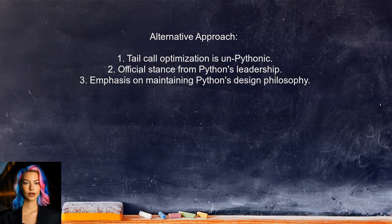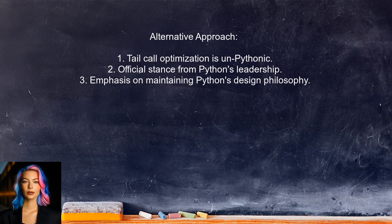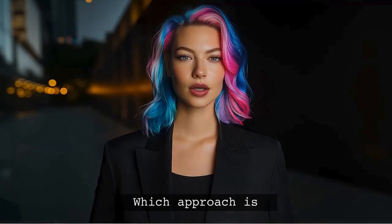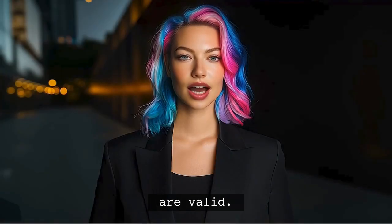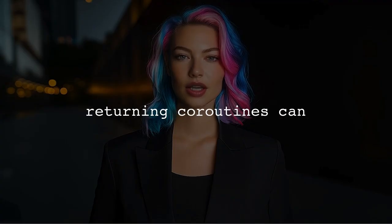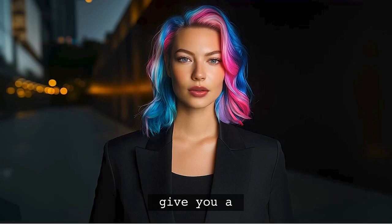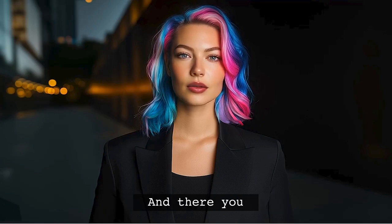According to another user, the question of whether using coroutines for tail calls is Pythonic is not subjective — they argue that tail-call optimization is officially considered un-Pythonic. This is based on a stance from the language's leadership, emphasizing that such optimization should not be part of Python. While both methods are valid, using regular functions that return coroutines can lead to cleaner, more maintainable code, and might give you a performance boost.